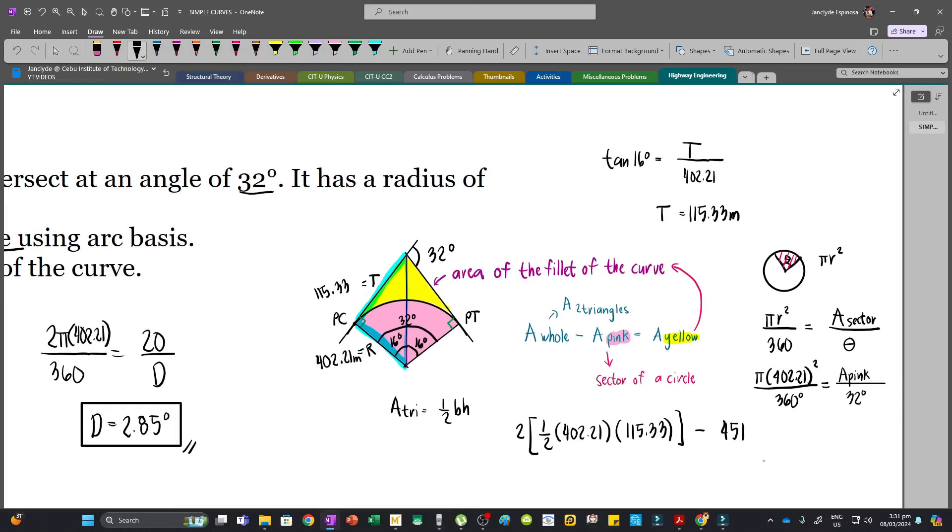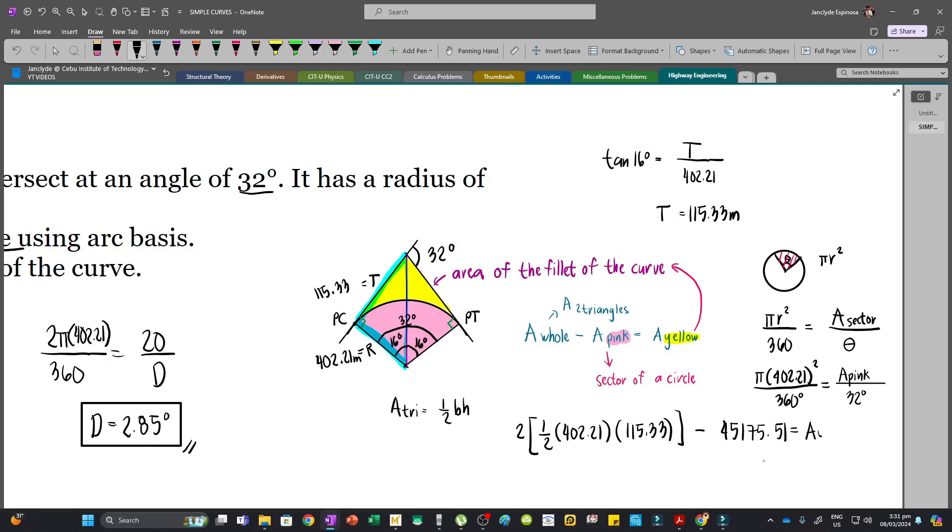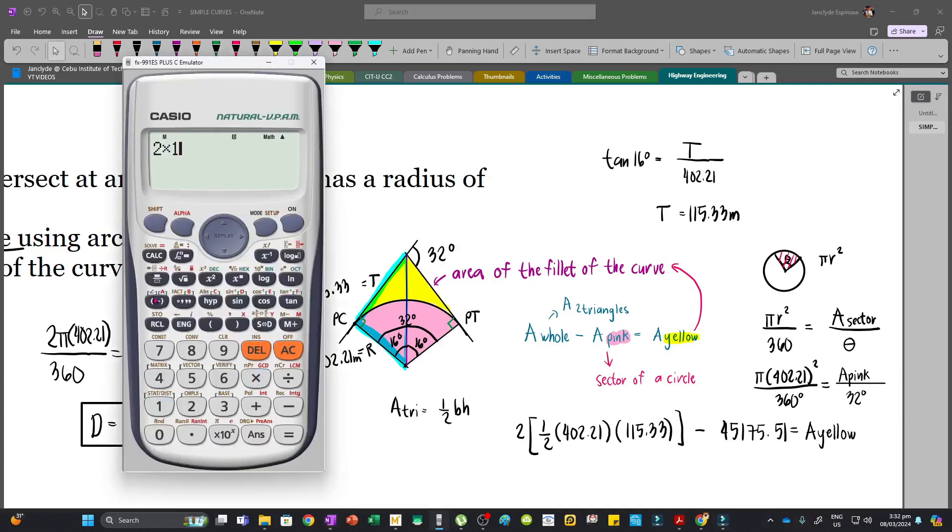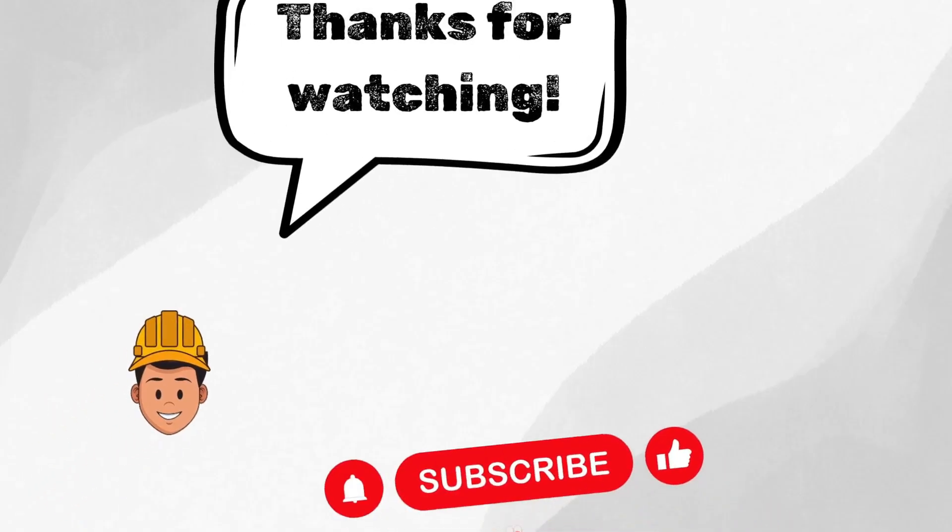So we have two times one half times base which is 402.21 times 115.33 minus 45175.51. So that will give us 1211.37. So the area of the fillet of the curve is 1211.37, and then our unit is m squared. So this is our answer.